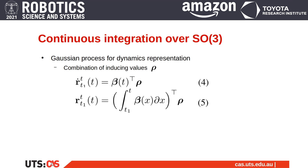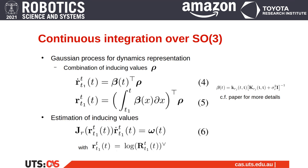Thanks to the application of linear operators to Gaussian processes, the integral of r-dot can analytically be inferred from the same inducing values. The main idea of the proposed method is to estimate the inducing values of the Gaussian processes according to equation 6, which links the minimum representation r of the orientation and the instantaneous angular velocity measurements from the IMU.